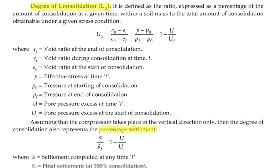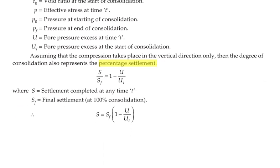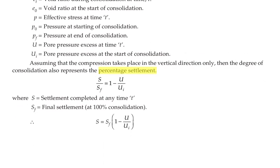The degree of consolidation in percentage is S / SF × 100, where S is settlement completed at any time T and SF is the final settlement at 100% consolidation.